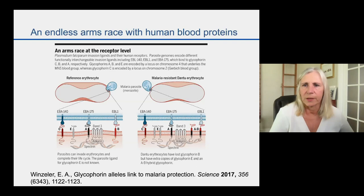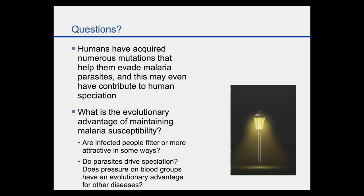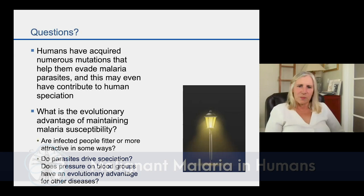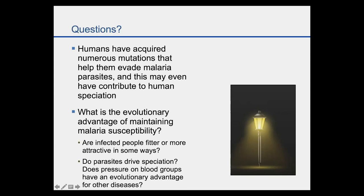A question one might have is: it seems fairly easy to acquire mutations that allow escape from malaria, and yet malaria continues to have a very big impact on human health — still huge numbers of cases. Since it's so difficult to maintain a life cycle — you need mosquitoes, the right receptors, tropical weather — how does this persist? Is there any advantage to the human species from malaria infection? Do parasites possibly drive speciation? Does pressure on blood groups have an evolutionary advantage for other diseases? Are infected people possibly fitter or more attractive than uninfected ones?